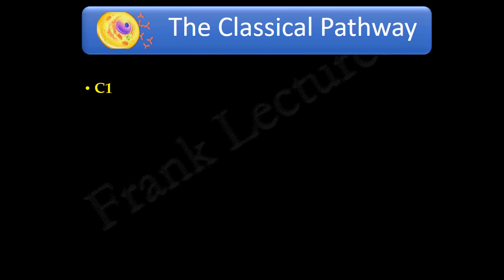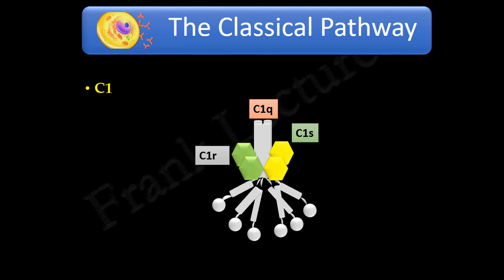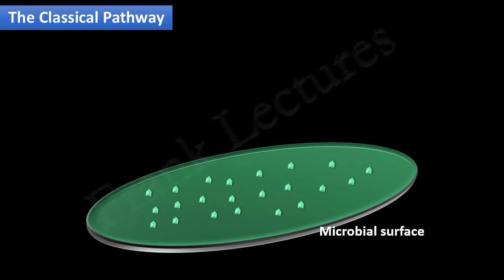In the classical pathway, complement protein C1 plays an important role. Remember, C1 is a complex composed of a large subunit C1q and two proteases, namely C1r and C1s. Let us now study the steps involved in the classical pathway.